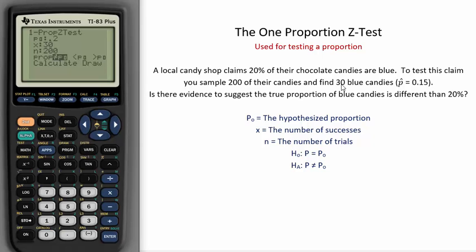Finally, we must pick the appropriate alternative hypothesis. Our question asks, is there evidence to suggest the true proportion of blue candies is different than 20%? We must write out the true proportion is not equal to 20% and we have selected it here.